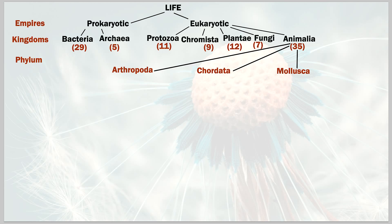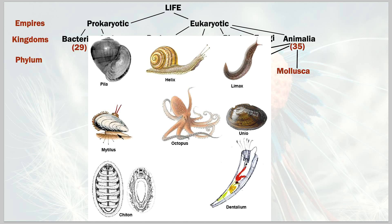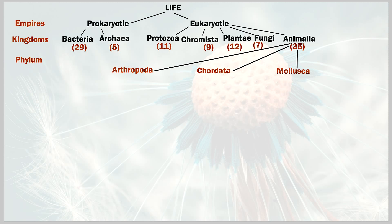I'm just going to present three out of the 35 phyla to avoid confusion. Mollusks include octopi, snails, squids, and similar life forms — that's the mollusk section.